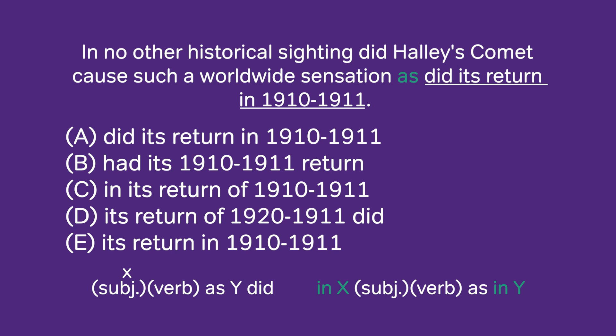Looking at the answer choices: 'so did its return' — this is comparing the return to Halley's Comet. 'Had its return' — first, the verb tense is wrong, and again this is comparing the return to the comet. 'In its return' — this has the correct structure, so this looks promising.